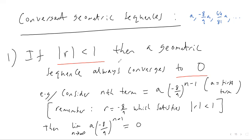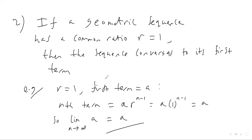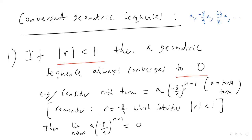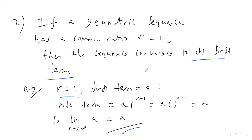Geometric sequences with common ratio less than one always converge to zero. But if r = 1, the sequence converges to its first term. This is because the nth term is a × r^{n−1} = a × 1^{n−1} = a × 1 = a, so the limit as n → ∞ is just a. In summary: if |r| < 1 a geometric sequence converges to zero; if r = 1 it converges to the original first term. That concludes today's video on convergent and divergent geometric sequences.